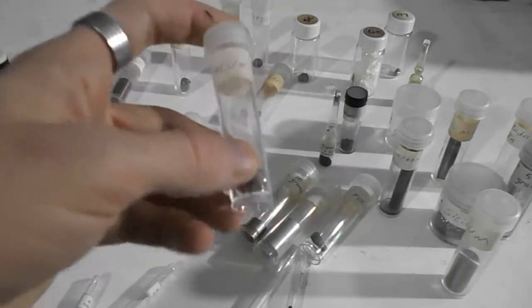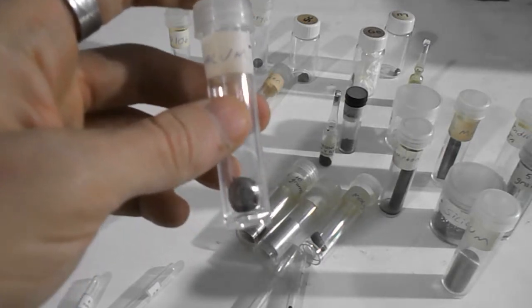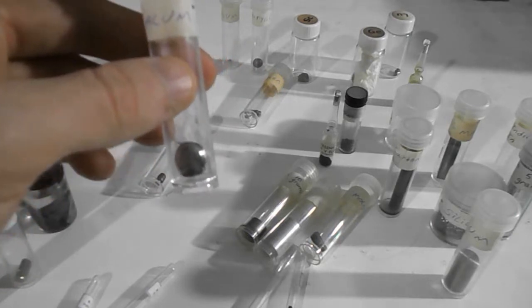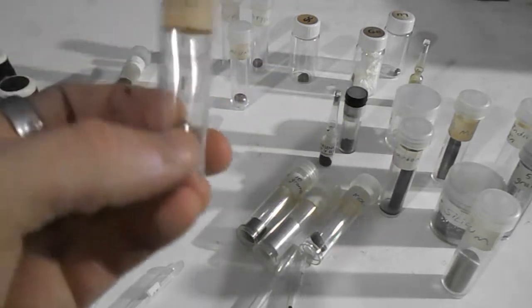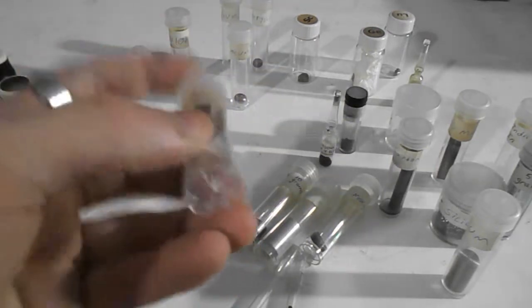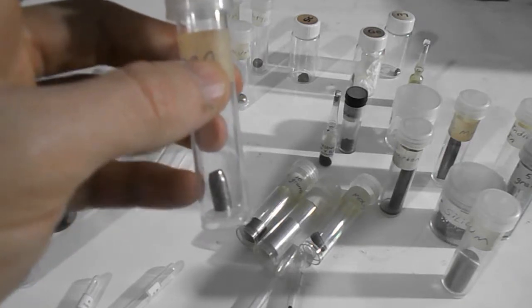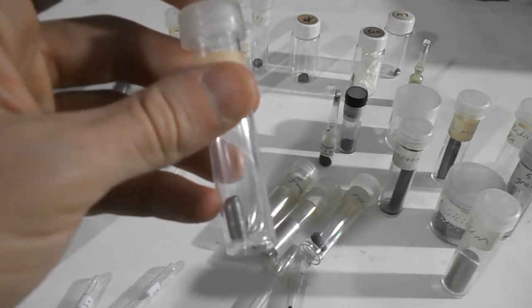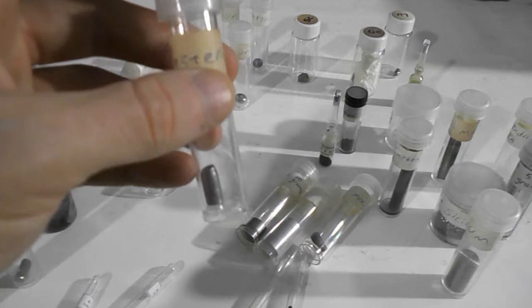This is tantalum. If I remember correctly, I believe tantalum is used in a certain kind of electrical capacitor. And over here is tungsten, which is also quite dense. Tungsten is used in incandescent lightbulb filaments, and in the form of tungsten carbide, it's used to make cutting tools because of its hardness.